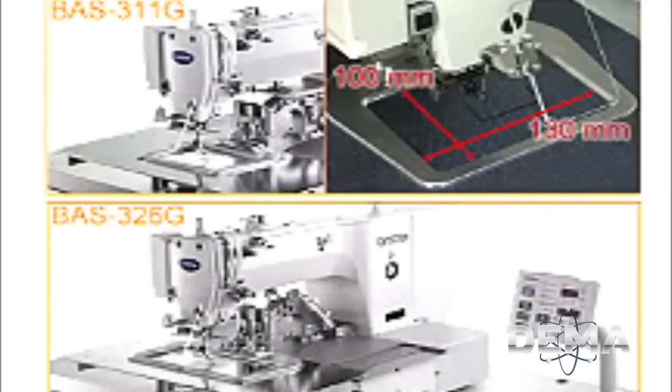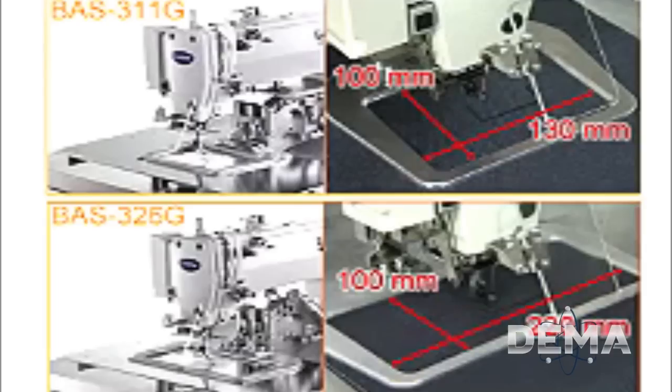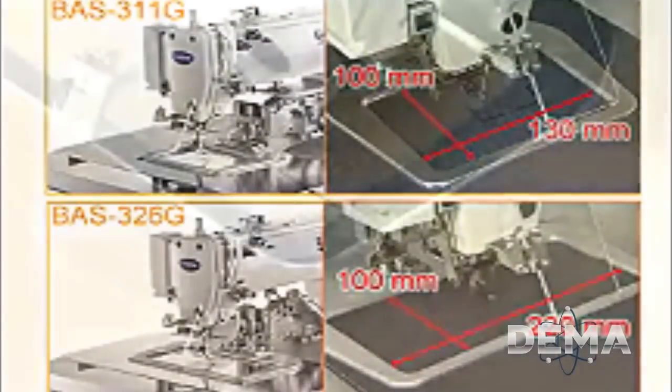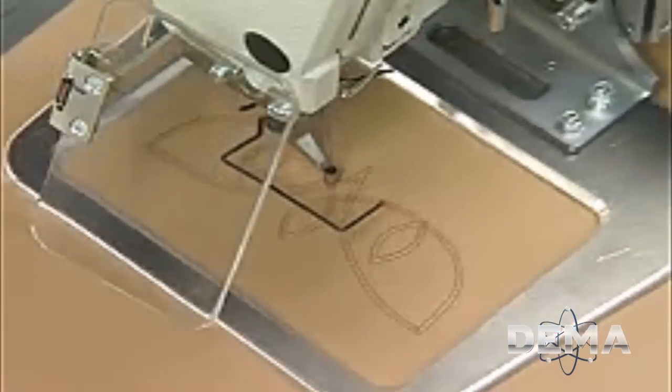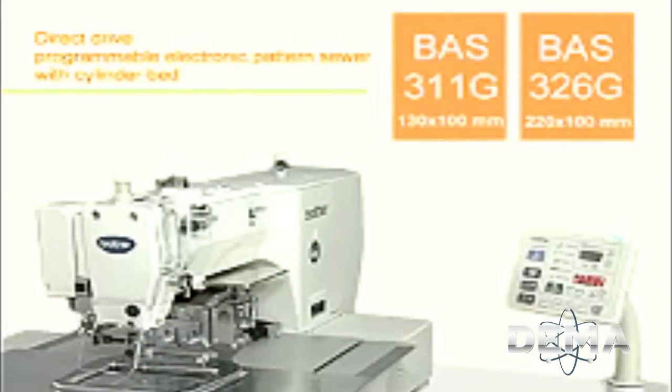The BAS311G and BAS326G are direct-drive programmable electronic pattern sewers which create beautiful stitches at high speed. We assure high sewing quality and productivity while achieving savings on energy.